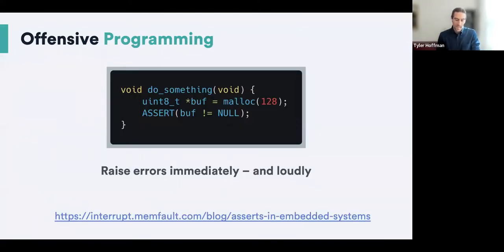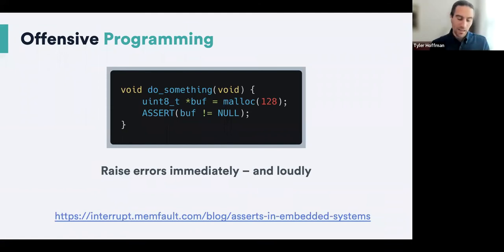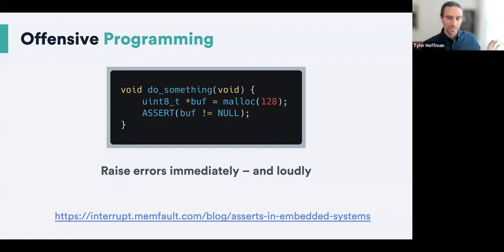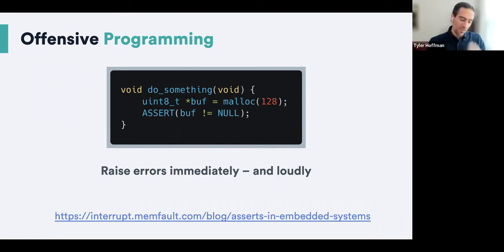Offensive programming — the idea behind it is raising errors immediately and loudly. If there is an error that pops up and there's a bug — malloc failed, a timeout in a weird place, bad input, an API used incorrectly — there's almost no point in pretending like the error didn't happen. I love using asserts, and that is what we're going to recommend. Asserts can accidentally take a lot of code space if not done correctly, so how to use asserts properly is in the blog post. They can take a very minimal amount of code space and CPU when done really well on embedded systems.